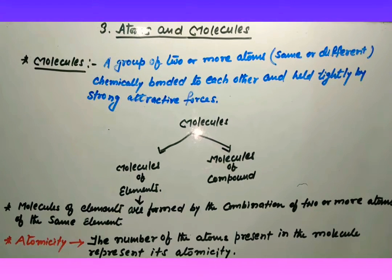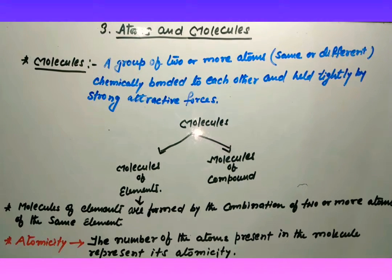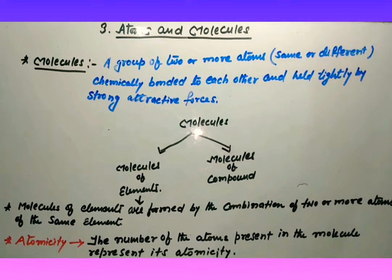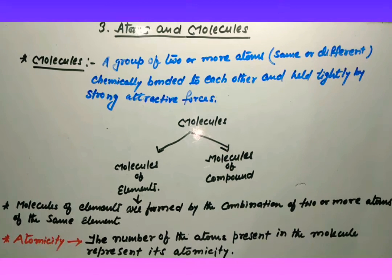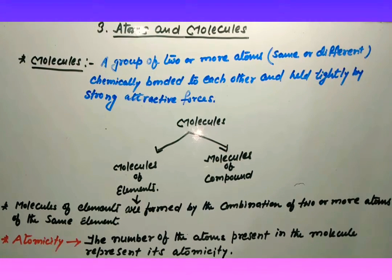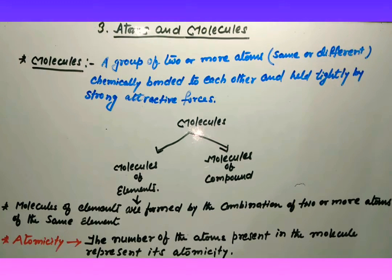If we talk in general, most atoms of elements do not exist independently. But the inert gas - inert gas or noble gas, both are the same - like helium, neon, argon, xenon, krypton - these all are noble gases or inert gases. Yeh quite stable hota hai. That's why they can exist independently. Toh yeh exceptional hota hai.